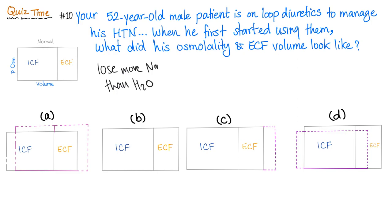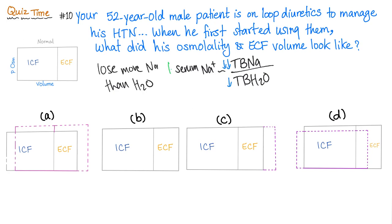Let's start with our silver equation: total body sodium over total body water equals serum sodium concentration. What happened when you lose more sodium than water? The serum sodium concentration is going to decrease. When serum sodium concentration decreases, what happens to plasma osmolality? It decreases, because it's mainly dependent on sodium.